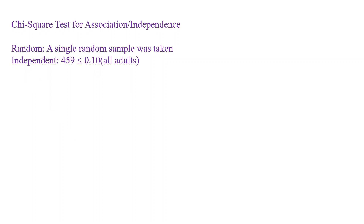Name your test as the chi-square test for association slash independence, then check the conditions. First, a single random sample was taken. Second, for independence, the 459 people must be less than 10% of all adults in the population. Third, all expected counts must be greater than five—and in this case, they are. If a condition is not met, note it and explain that conclusions might not be fully valid, but still continue with the inference procedure.